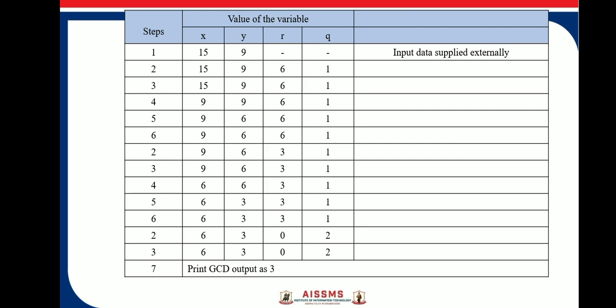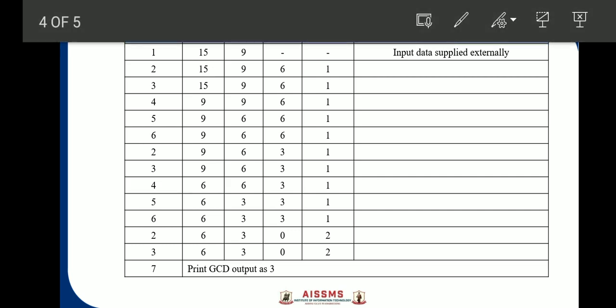Now, here, let us consider this example where value X and Y are 15 and 9. Here, first step is, as I said, find out, assign first number as X, another number as Y. Then step 2, what is step 2?